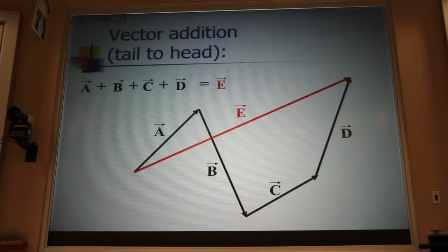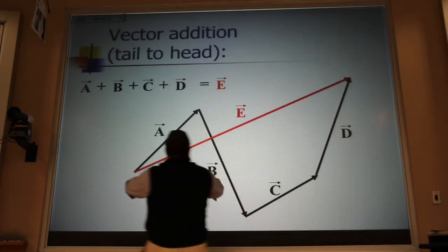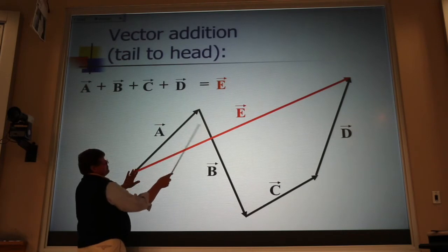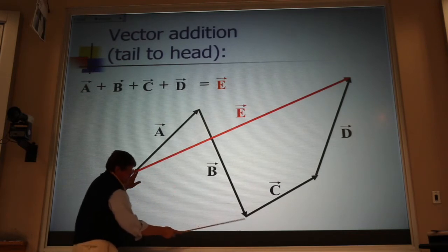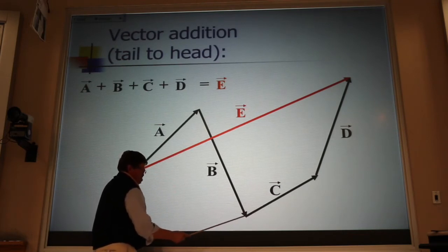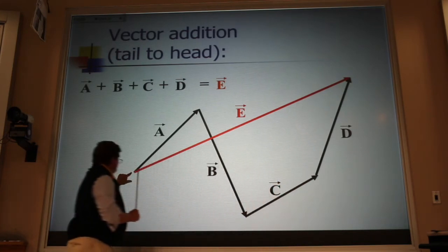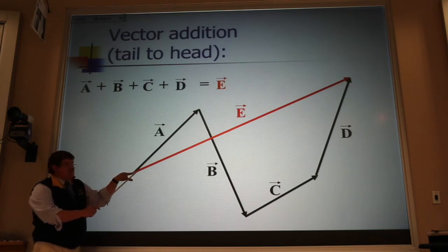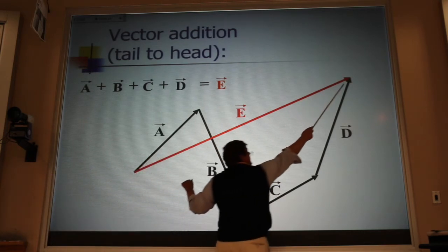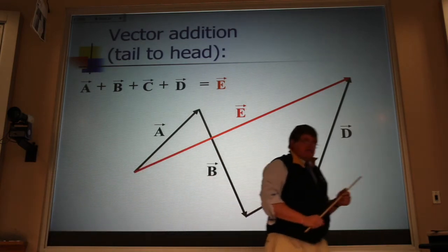Now, I can add a lot of vectors. I can take the vector A, and I can add, there's the plus sign, the vector B. And then I can add, there's the plus sign, the vector C. I can add the vector D. The total sum is just from the first starting place to the last ending place as the crow flies.